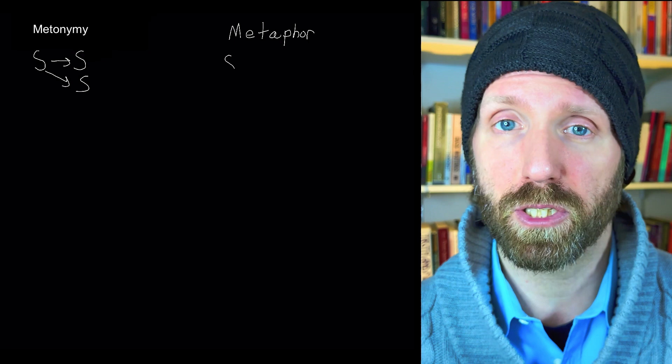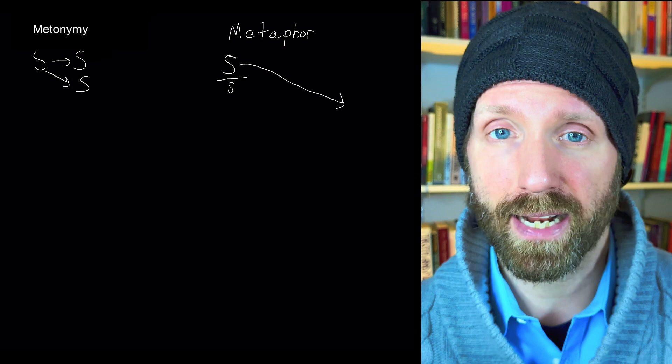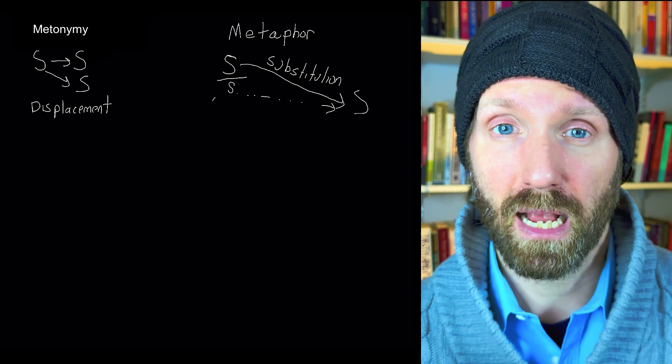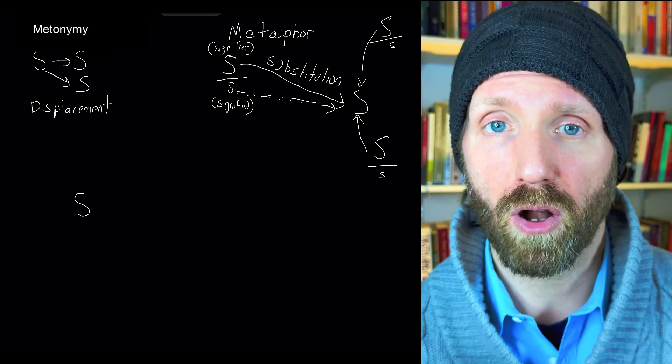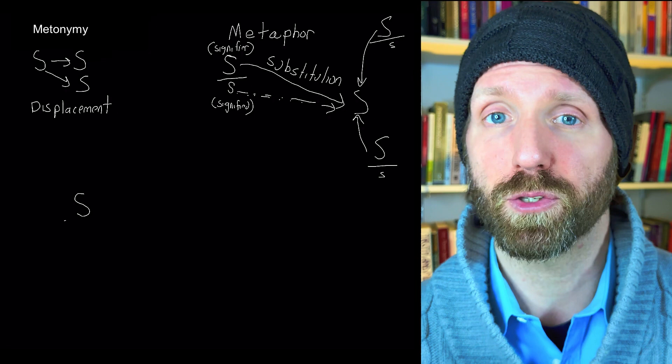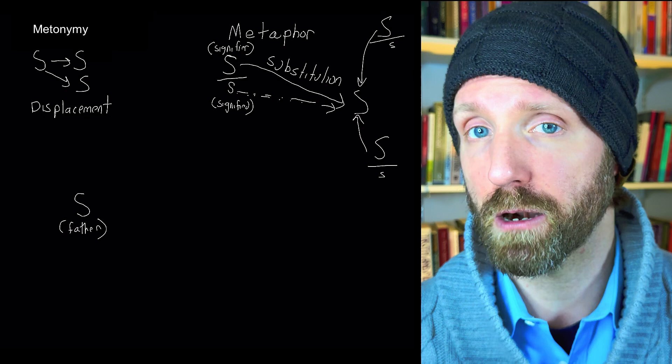In other words, there is a concrete association that links them. Metaphor, in contrast, marks the substitution of one or more signifiers for another signifier, marking a transfer of meanings from one signifier onto another, with sometimes several signifiers converging upon a single signifier, giving rise to what we called in Seminar 3, quilting points. Metonymy and metaphor are both relevant to the phobic object.